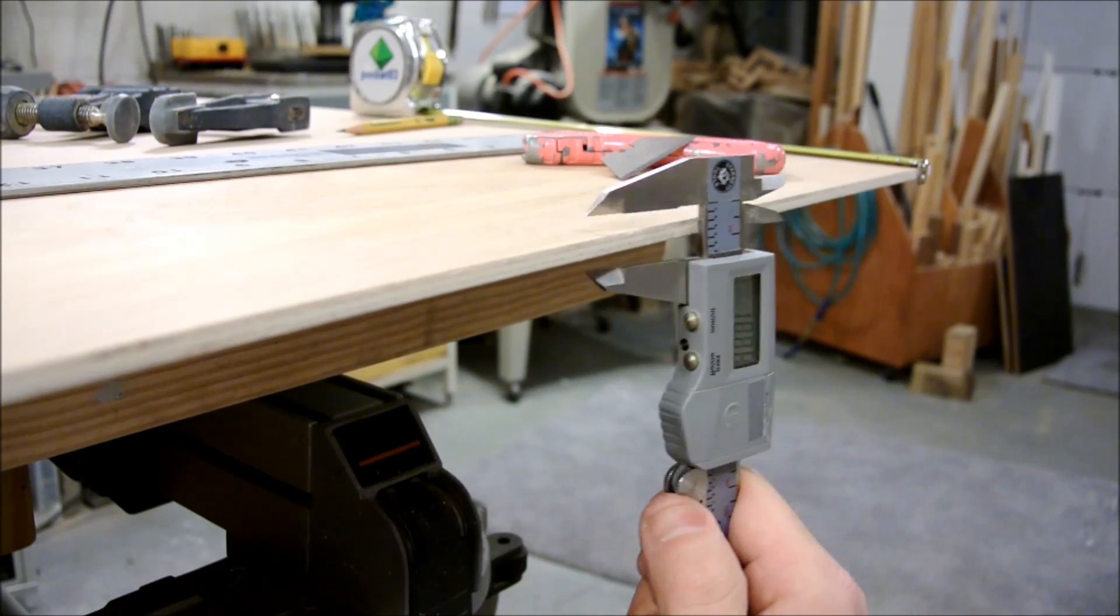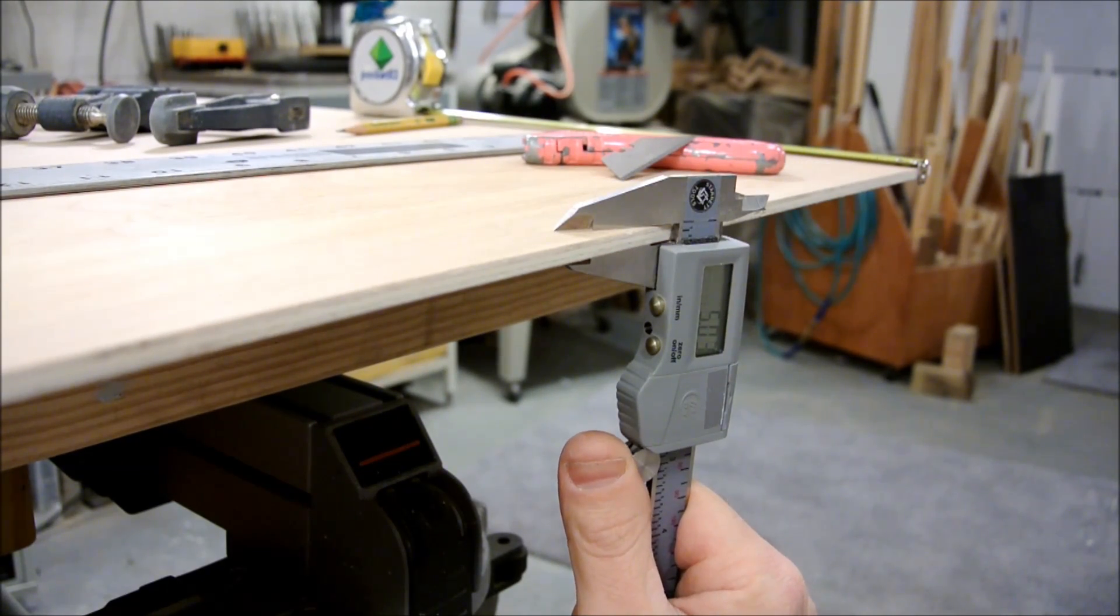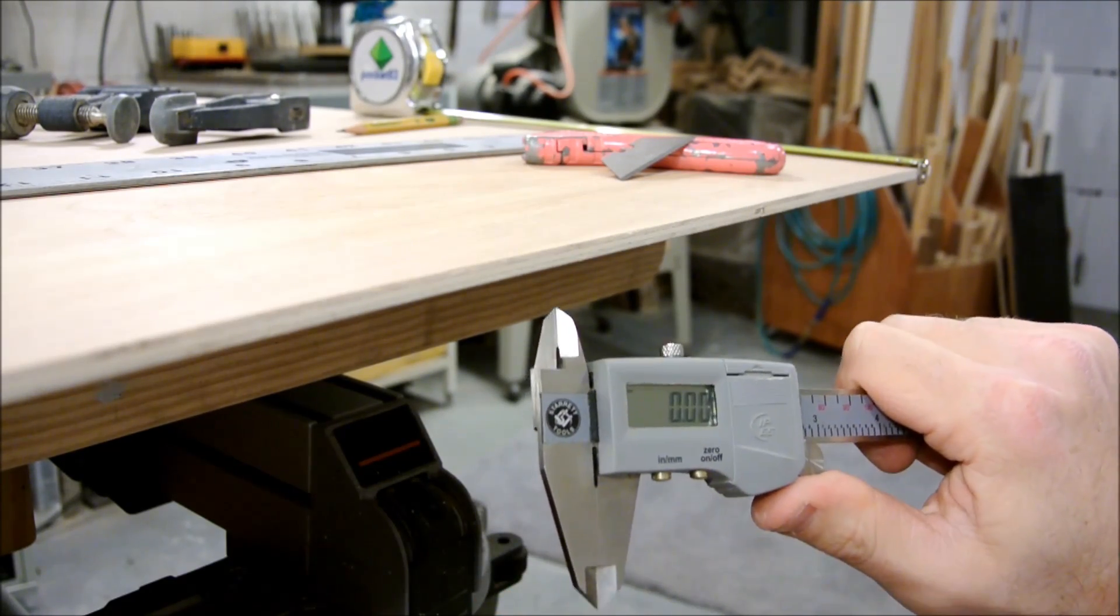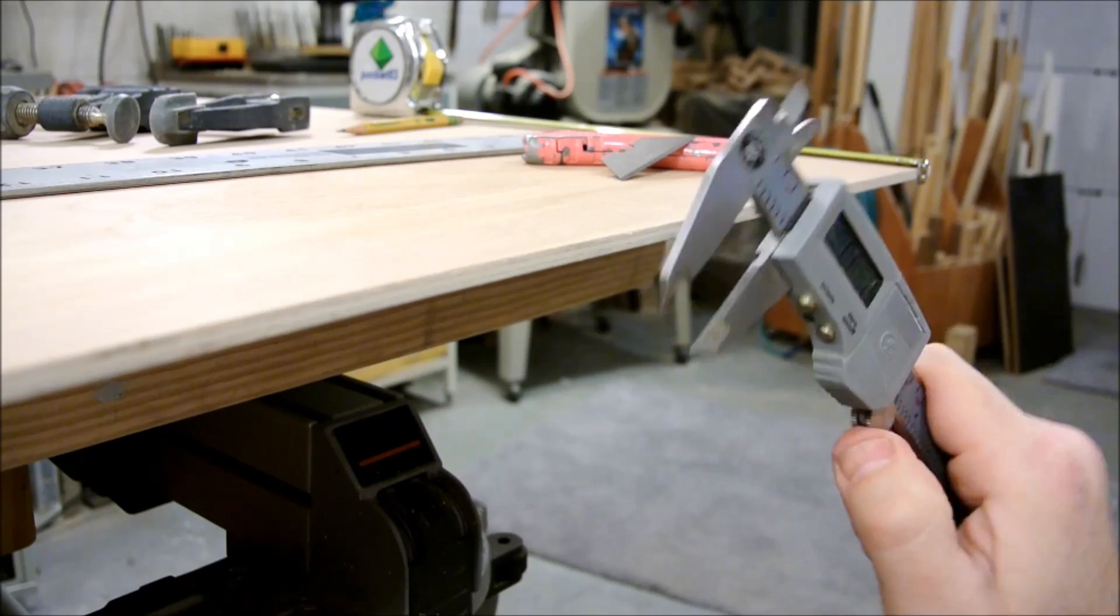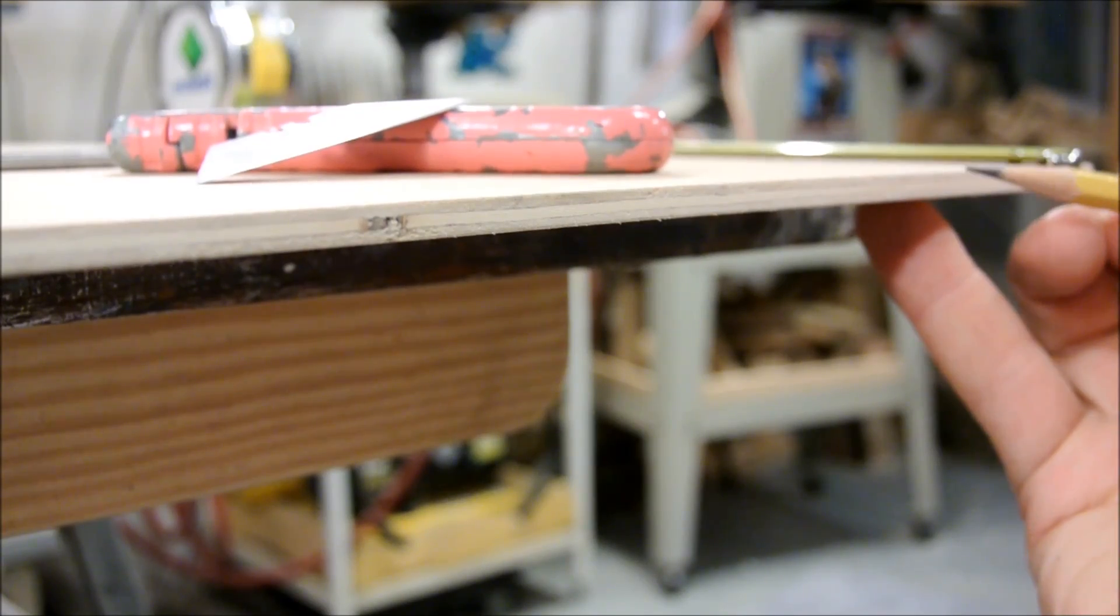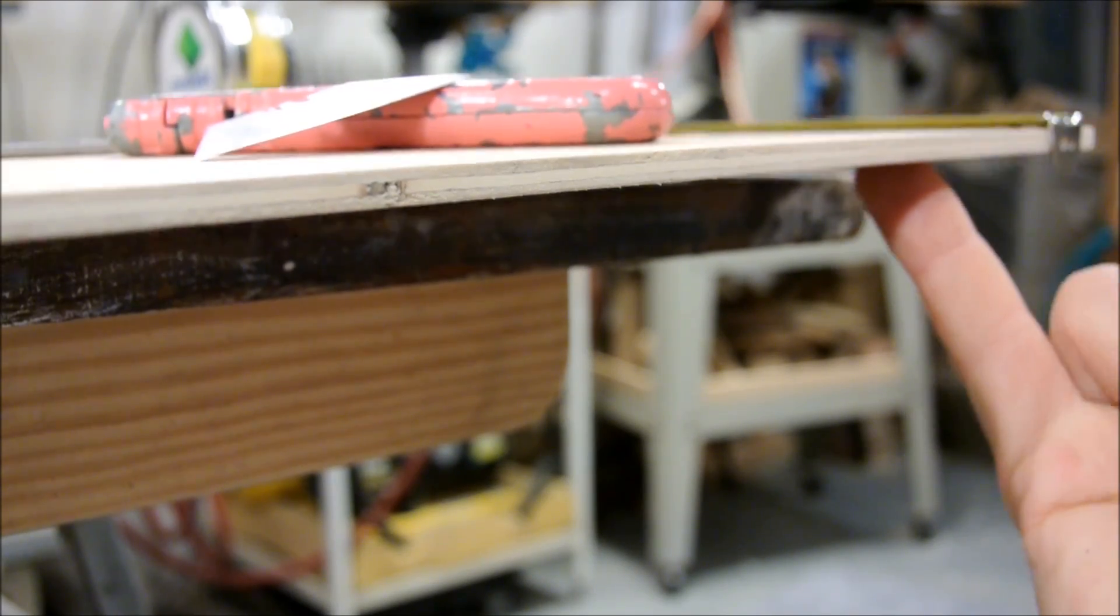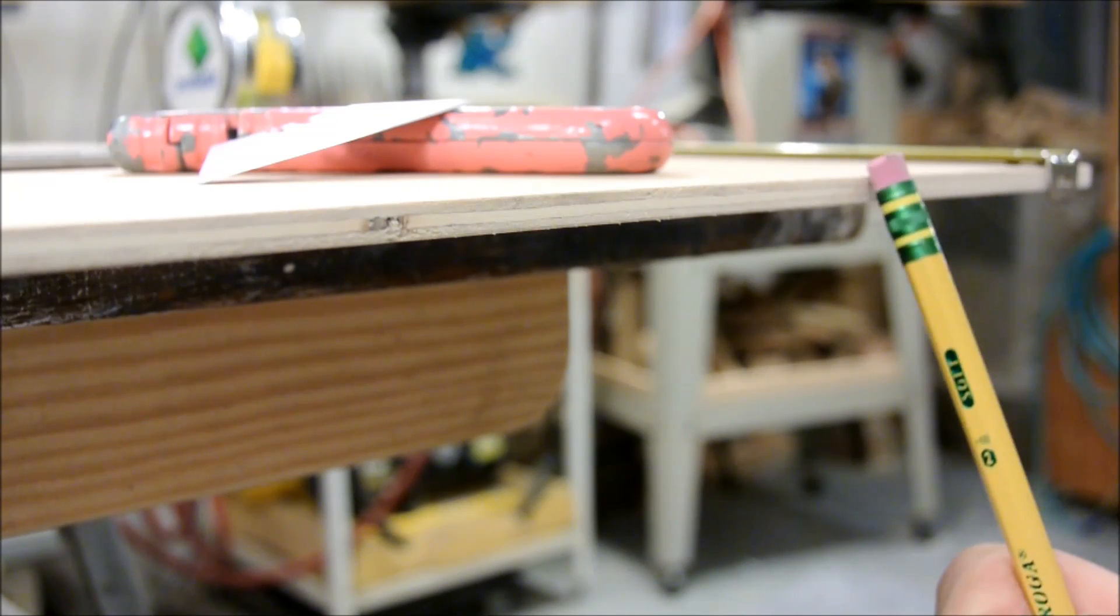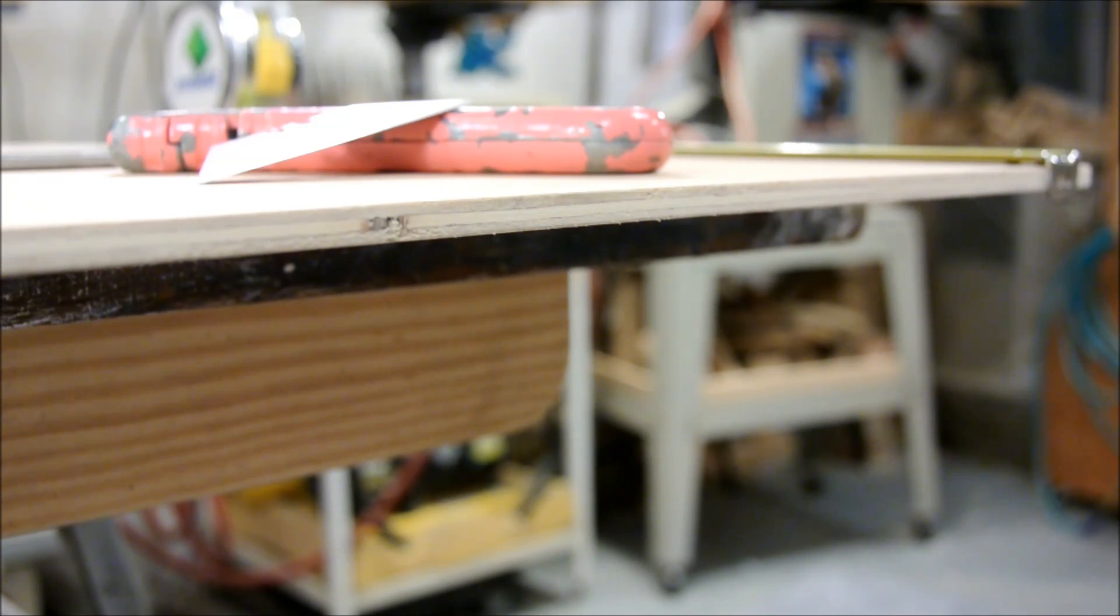This plywood material that I'm using is intended to be an underlayment, and it's just over 5 millimeters, which is just under a quarter of an inch. This is a 3-ply material, and it's super lightweight and super inexpensive. I picked up a 4x8 sheet to make this video for $12.